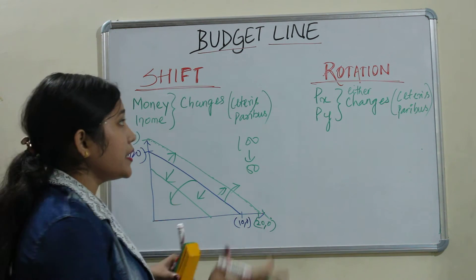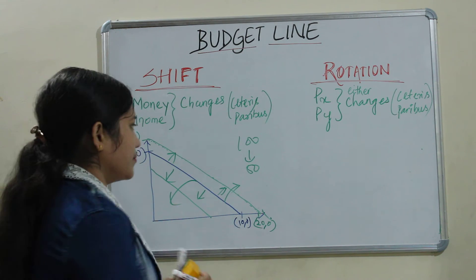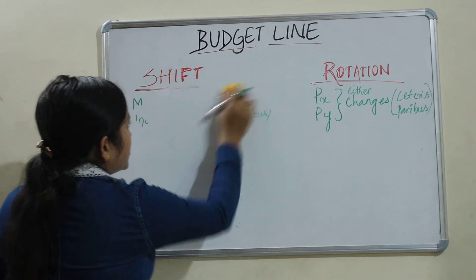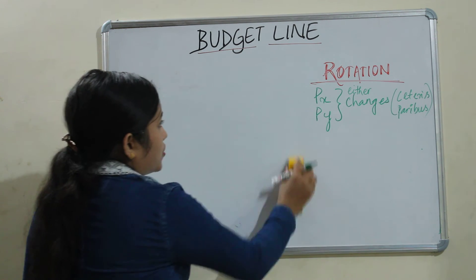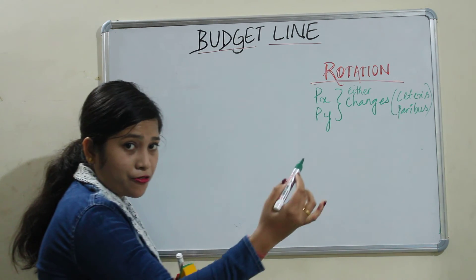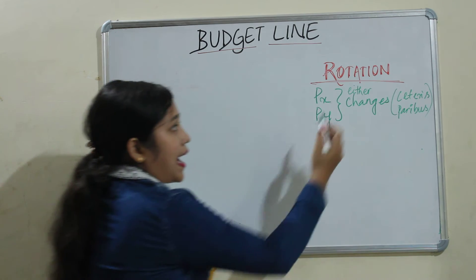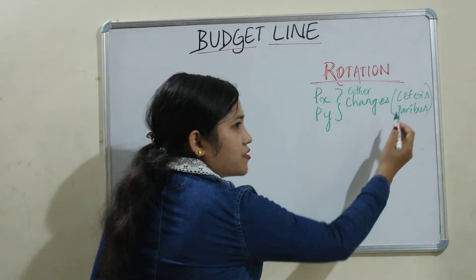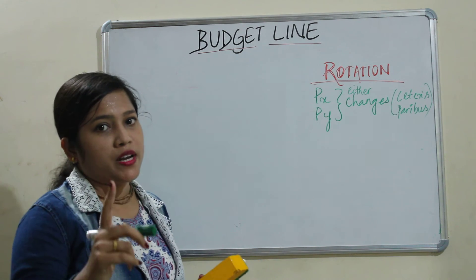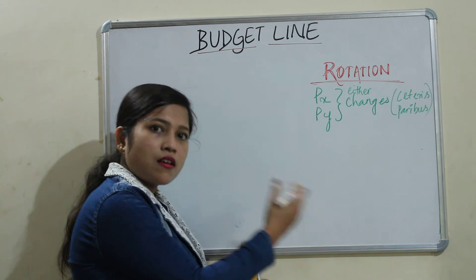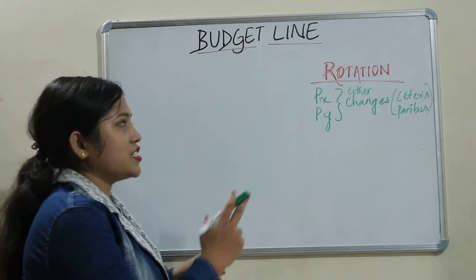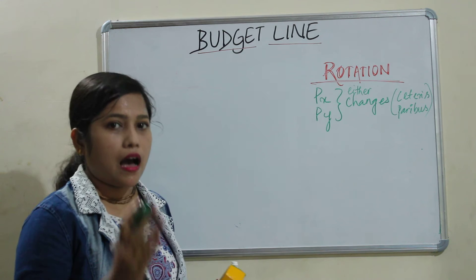This is all about the shift in the budget line. Next we will study how it rotates. Rotation occurs when the price of X or price of Y changes — ceteris paribus, meaning other things remain constant. When only one price changes, the budget line rotates.